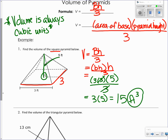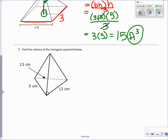Our second example—we have another pyramid, but now we have to look at that base and see what the shape of that base is. And in this case it is a triangle, so we have a triangular pyramid.